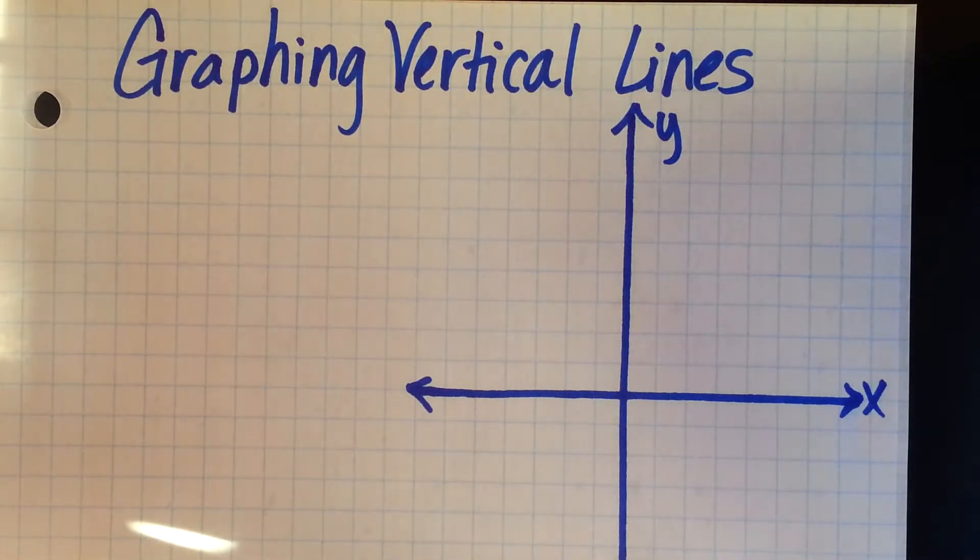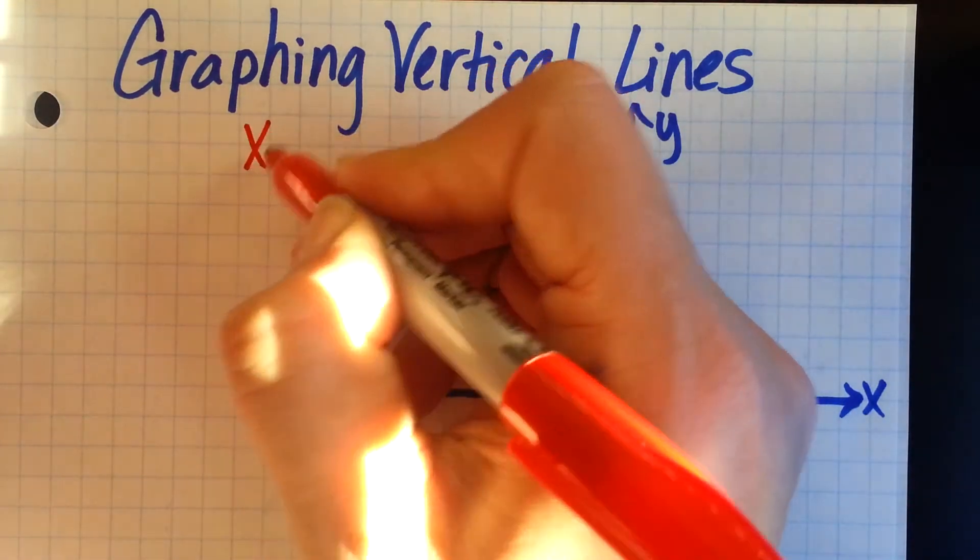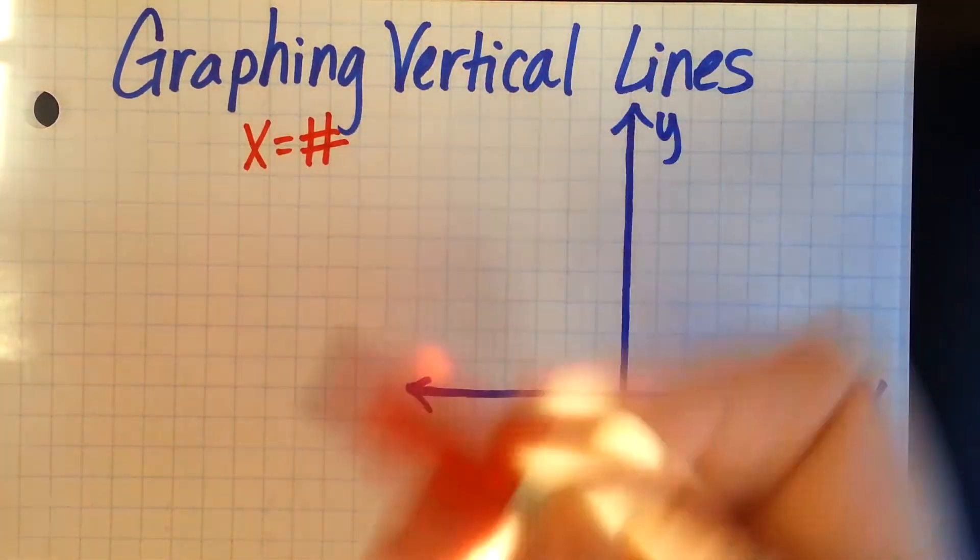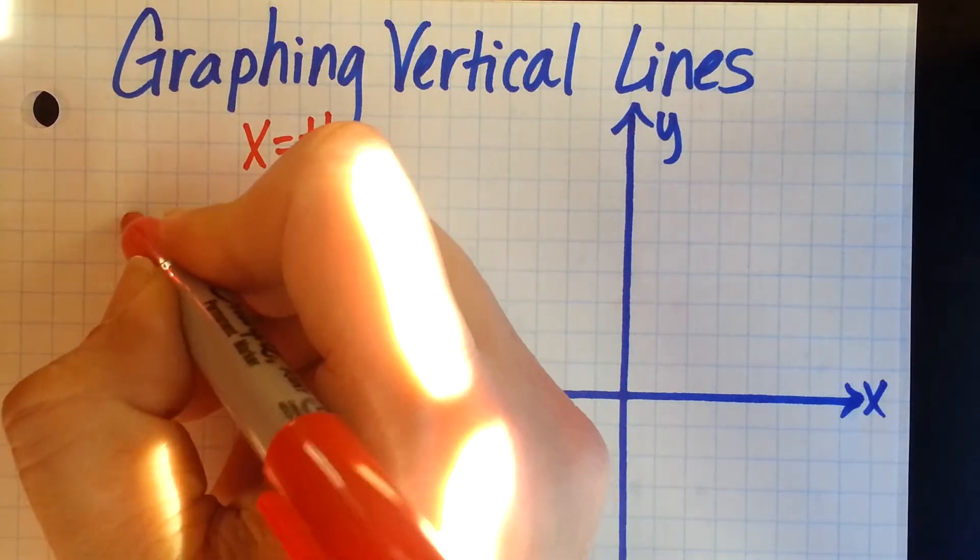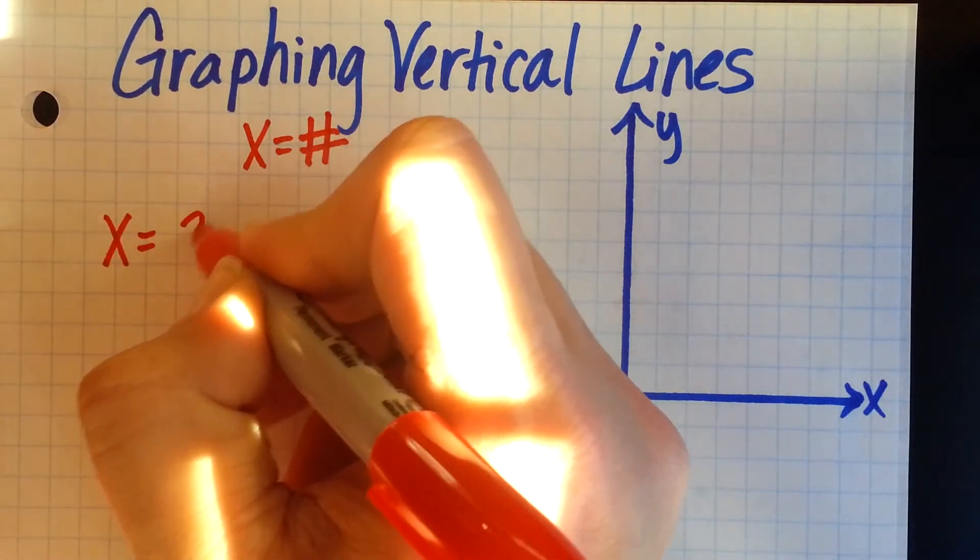Remember when we want to graph vertical lines, we need to know the equation. The equation always looks like x equals some number. So for the first one we're going to do, we're going to say x is equal to 3.